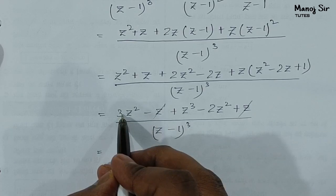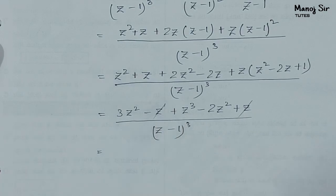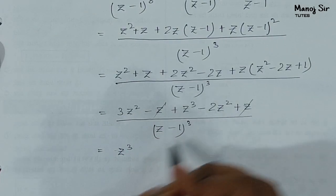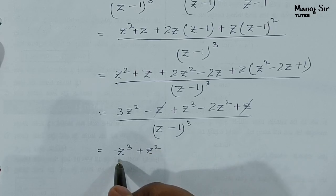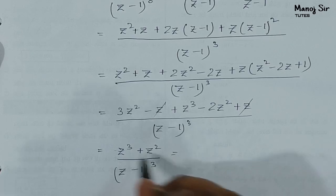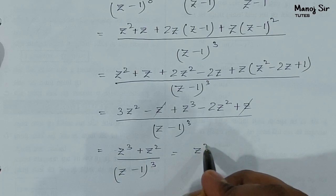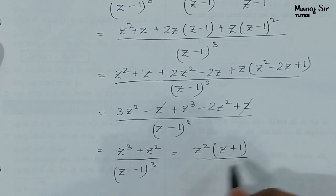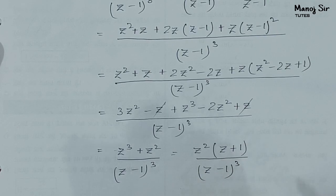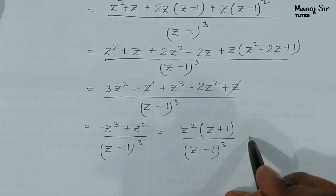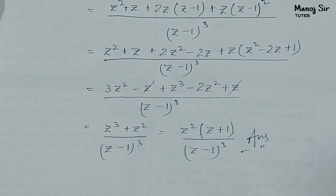The z terms cancel. What is left is z³+z², over (z−1)³. Taking z² common from the numerator gives z²(z+1)/(z−1)³. This is the final answer for the first part.